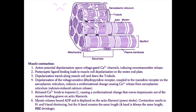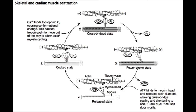When calcium binds troponin C, tropomyosin moves out of the way and actin and myosin can interact. Myosin latches onto the actin and pulls on it — this is called the power stroke. As myosin continues pulling on actin, it shortens the muscle fiber. The I band gets shorter, and the H zone gets shorter as well, but remember the A band — the length of the myosin thick filament — does not change.